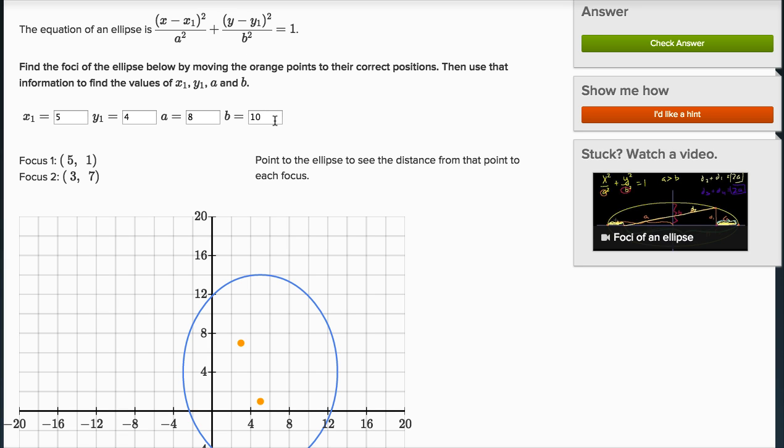So in this case, you would find the difference between 10 squared and 8 squared. Well, that's going to be 100 minus 64, which is 36. And then you take the square root of that. So it's going to be equal to 6. So the focal length is going to be equal to 6.